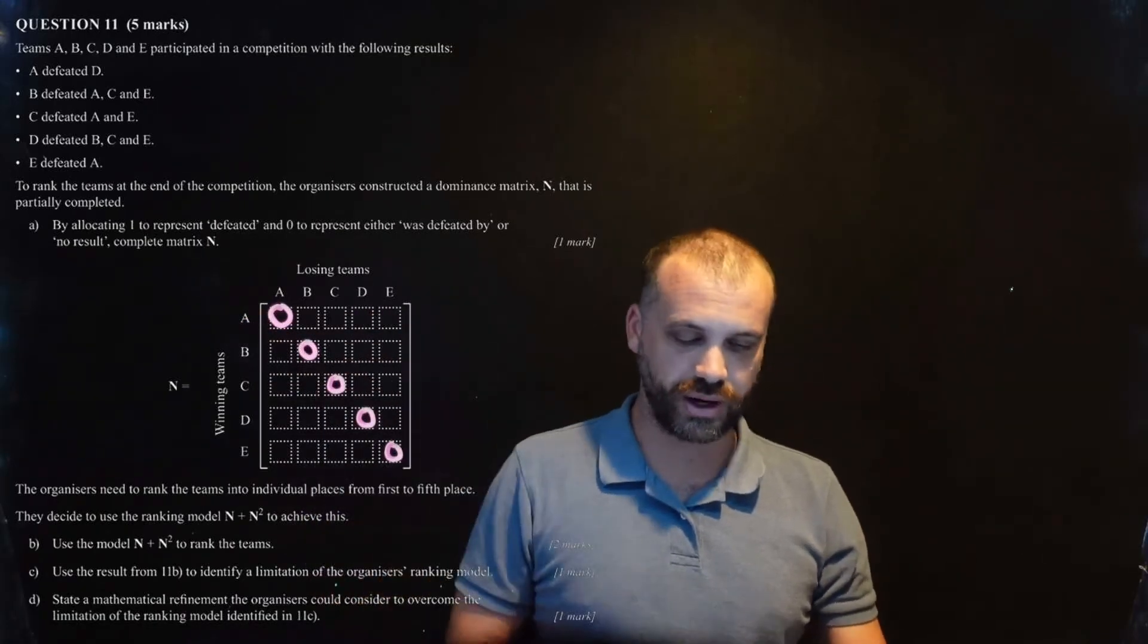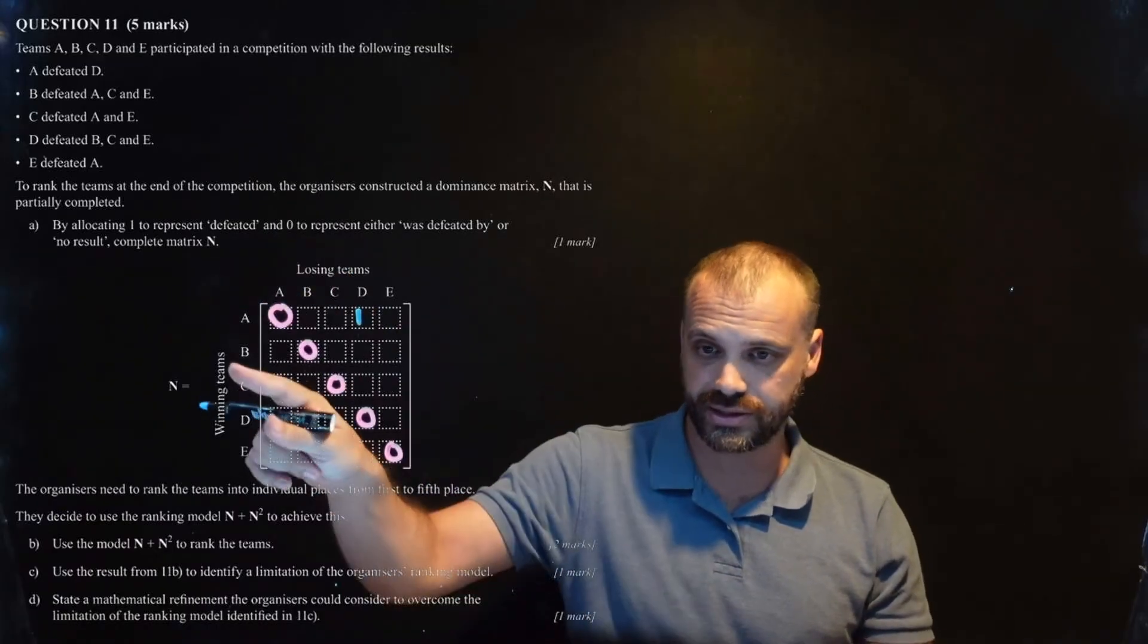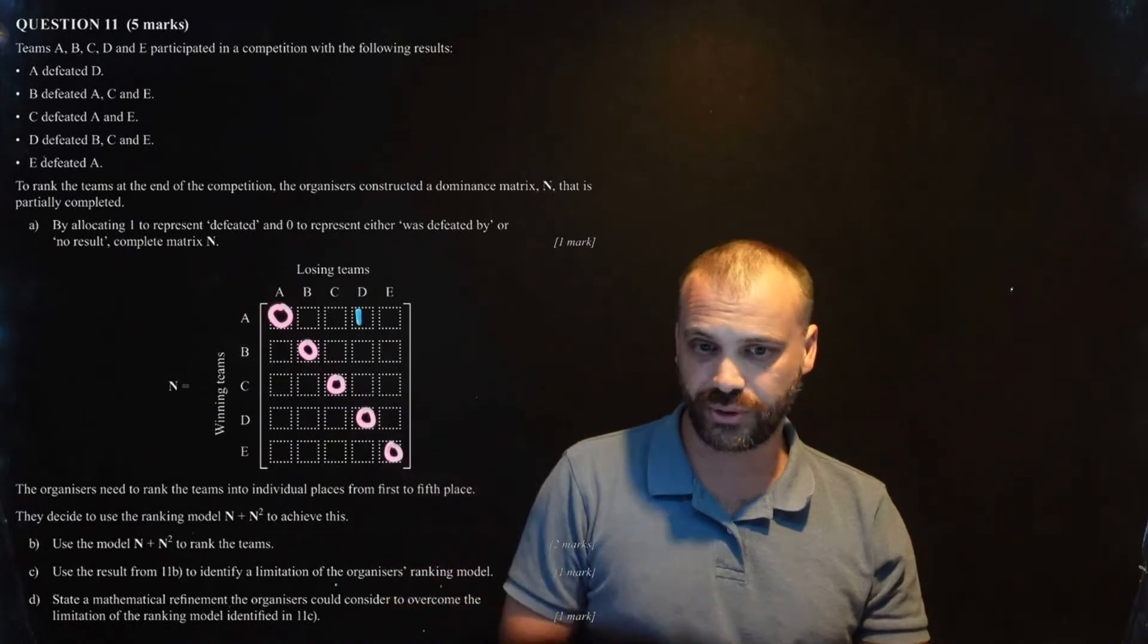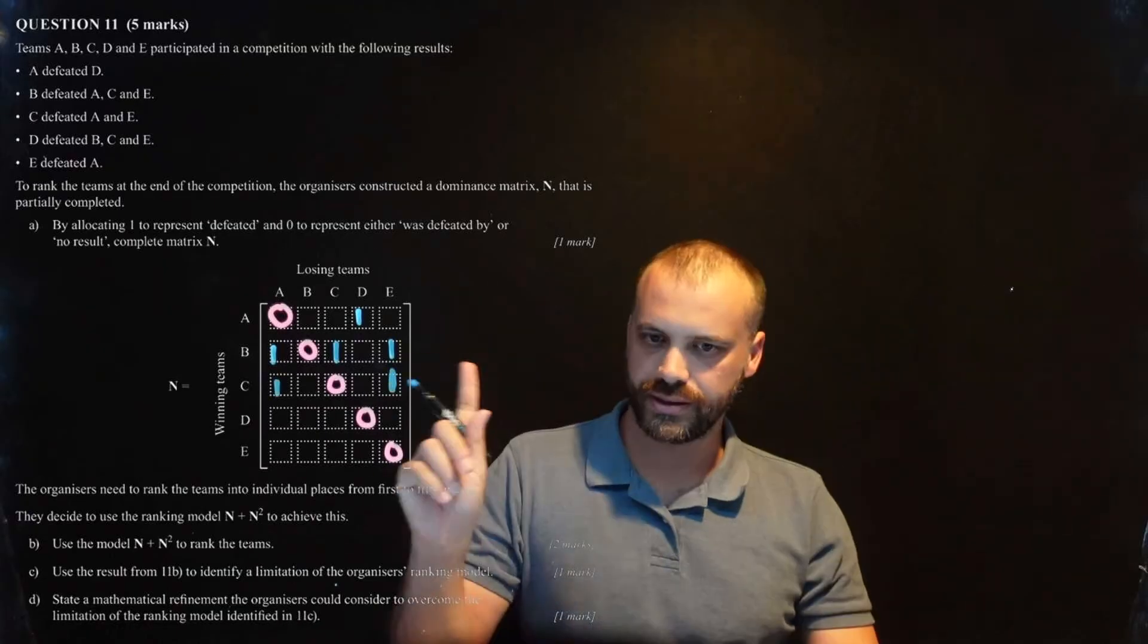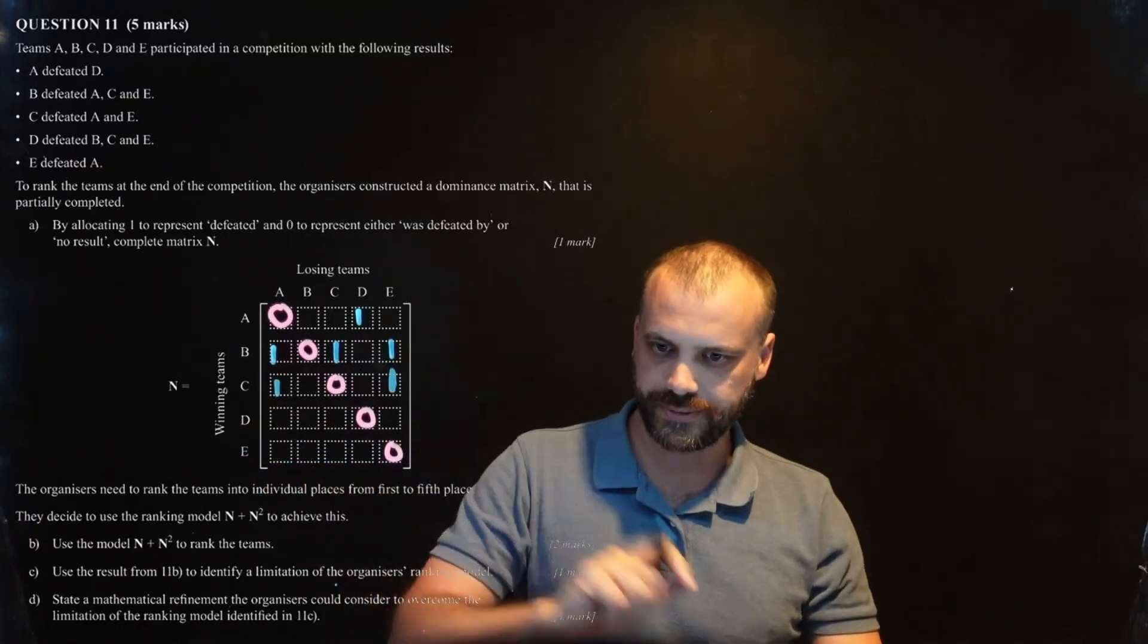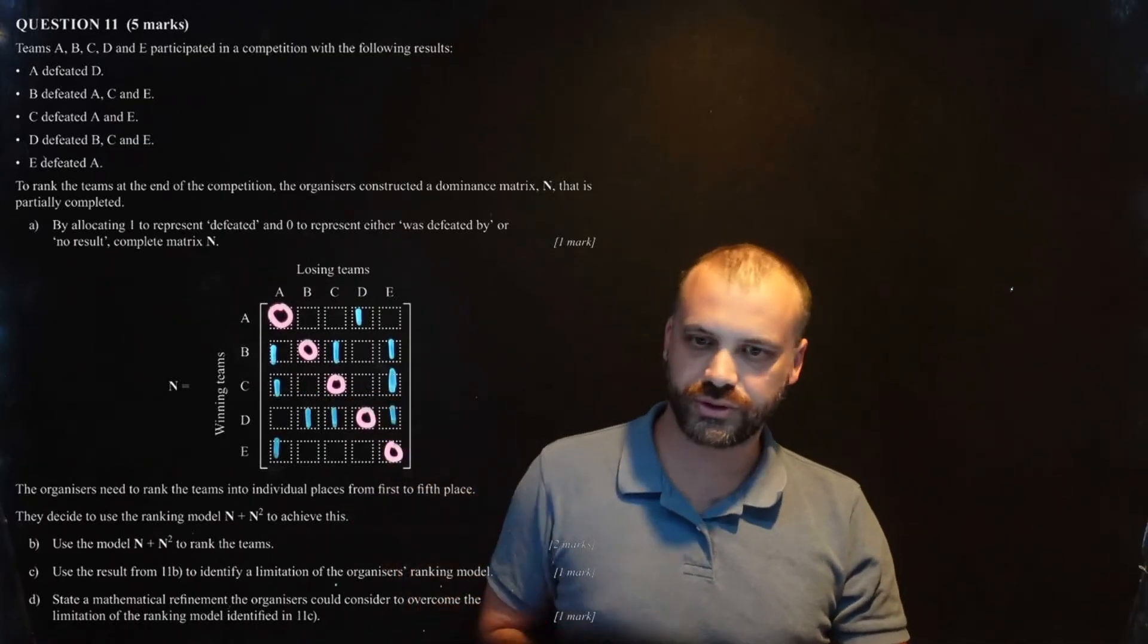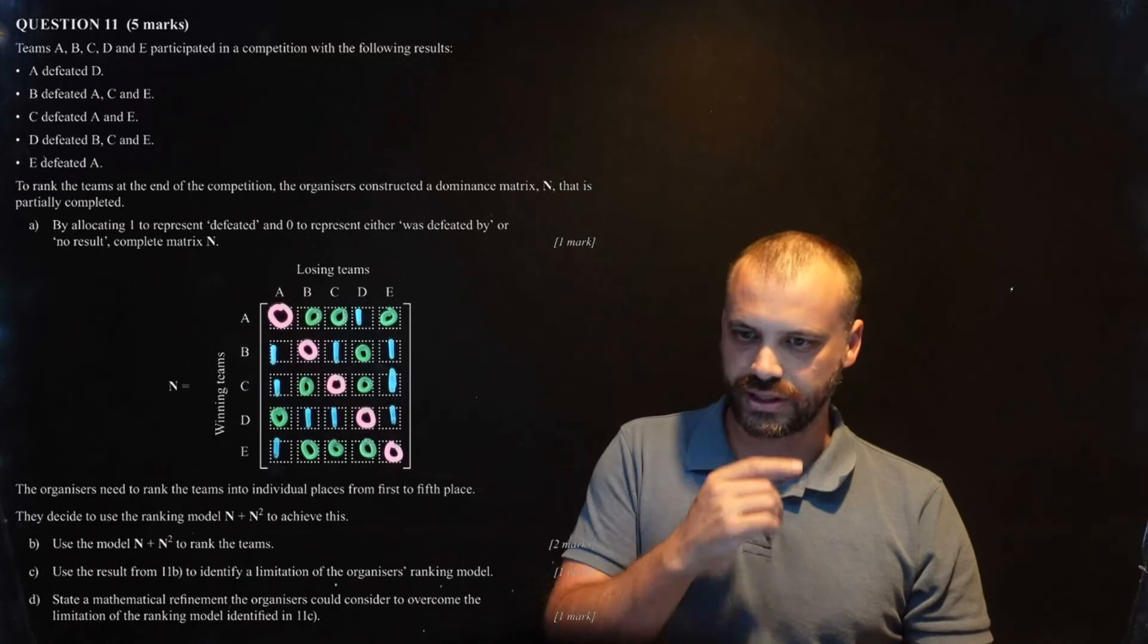A defeated D. And I'm going to put a number 1 right there. Next up, B defeated A, C, and E. So, starting at B. A, C, and E. You know what I mean. C defeated A and E. So, either side. D defeated B, C, and E. And finally, E defeated A. That's all the wins. All we need to do is fill the rest in in zeros. Alright. That is one of the most colorful things I've ever done. I love it.